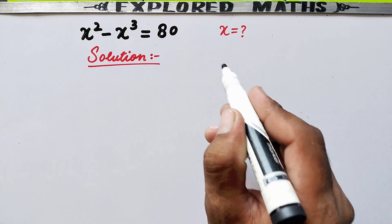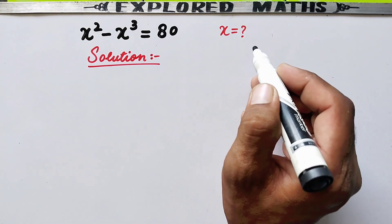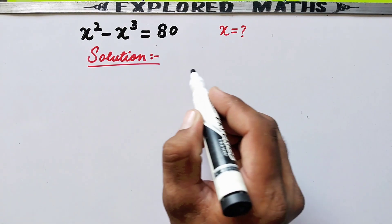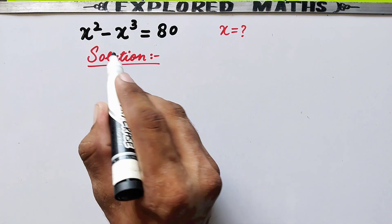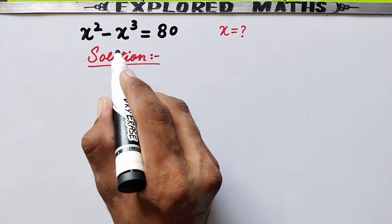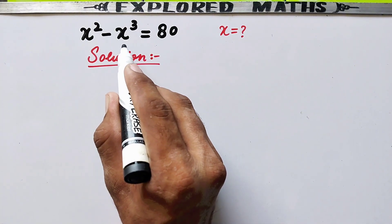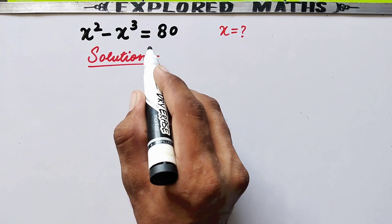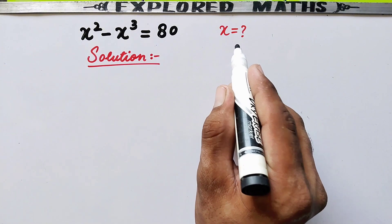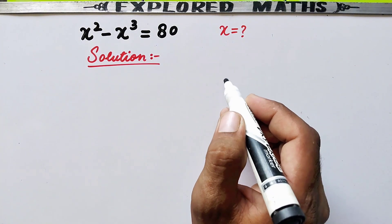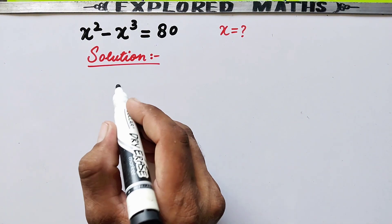Hello and welcome to my channel Explored Maths. In this video we are going to solve a very nice algebraic equation. Here we have x squared minus x cubed is equal to 80. Then what is the value of x? Here is its solution.